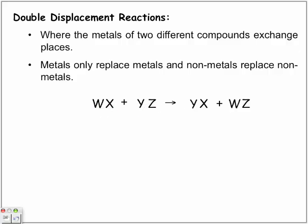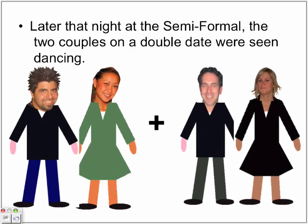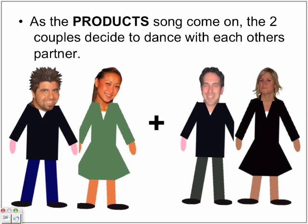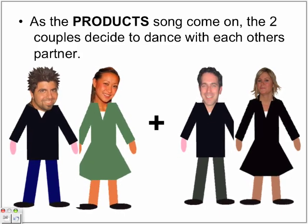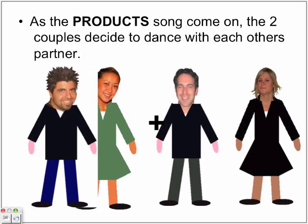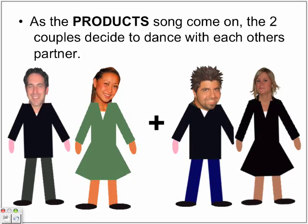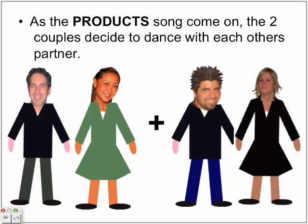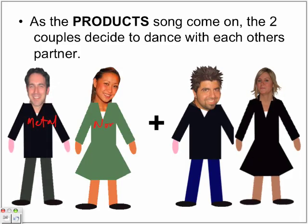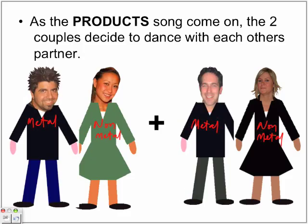Here we have a couple at the semi-formal — later that night, the two couples on a double date were seen dancing together. As the next song comes on, the two couples decide to dance with each other's partner — their best friends — so they switch partners and dance with one another. We're treating this as metal, non-metal — so metal and non-metal. The labels are: metal, non-metal for the reactants, then in the products they switch places.